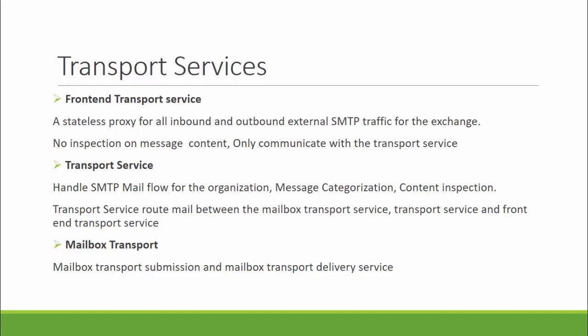The second service is the transport service, which is virtually identical to the hub transport server role in previous versions. This transport service handles all SMTP mail flow, performs message categorization, and performs message content inspection. The third service is the mailbox transport service, which consists of the mailbox transport submission service — to deliver messages to the local mailbox server — and the mailbox transport delivery service, to retrieve messages and submit them over SMTP.